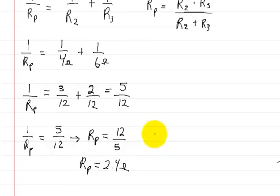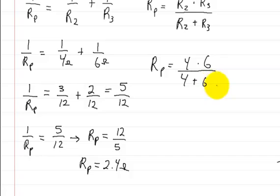So now let's try this other formula. The resistance in parallel is equal to R2, R2 was 4 ohms. We're going to multiply it by R3, which was 6 ohms. That's going to be over R2, which was 4 ohms, plus R3, which was 6 ohms. So 6 times 4 is 24. 4 plus 6 is 10. So 24 divided by 10, that's going to give you the resistance in parallel is equal to 2.4 ohms.